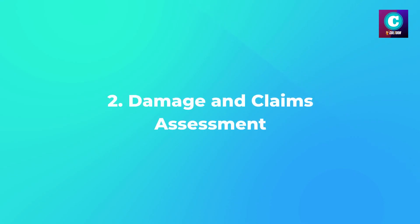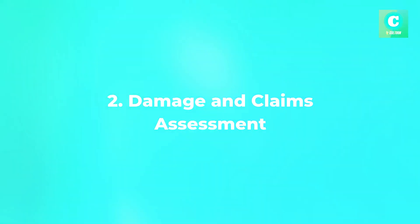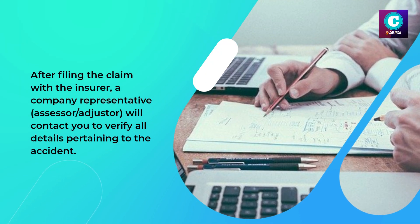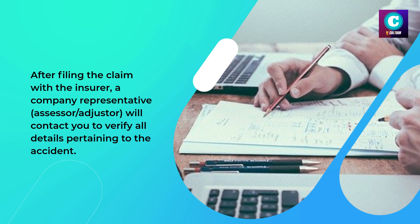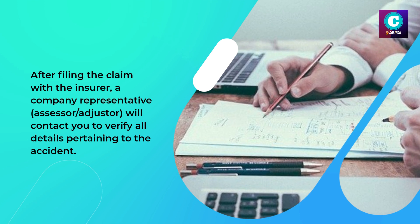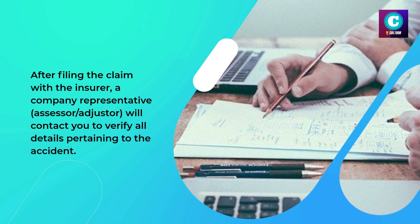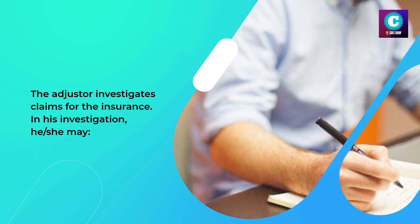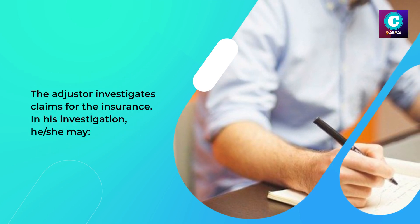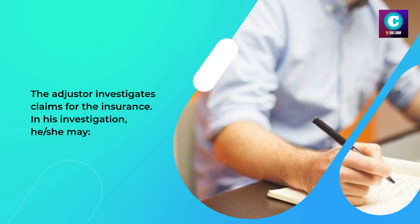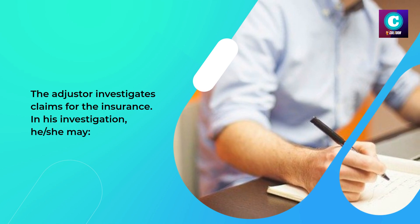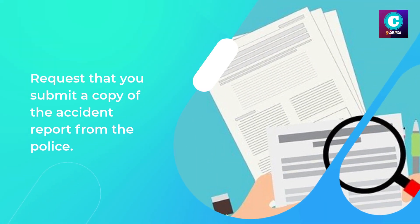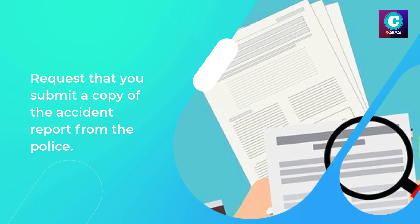2. Damage and Claims Assessment. After filing the claim with the insurer, a company representative — assessor or adjuster — will contact you to verify all details pertaining to the accident. The adjuster investigates claims for the insurance. In his investigation, he or she may request that you submit a copy of the accident report from the police.